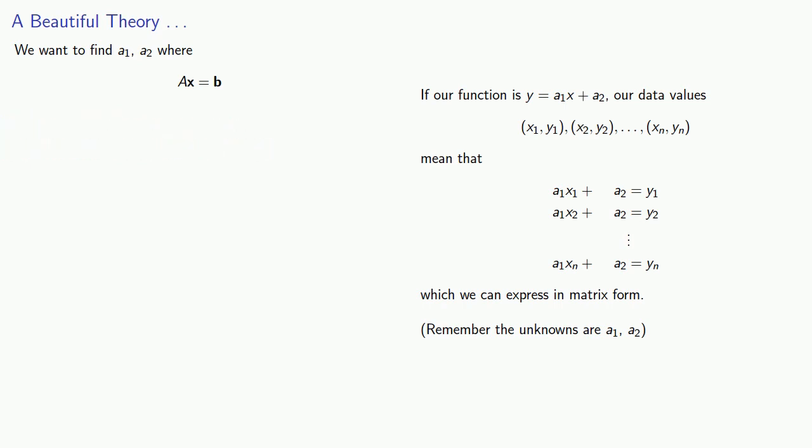So x, our column vector of the variables, is going to be a1, a2. We'll throw an implied coefficients of 1 in front of our a2s, and peel off our coefficient matrix A, and the matrix of constants b.